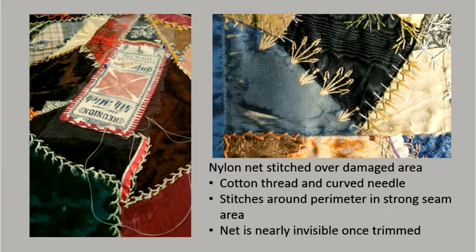On the left, you can see a net overlay in process, complete with the curved surgical needle you use to sew the fabric in place. On the right is a finished net patch where the edges have already been trimmed. Note that the net is almost invisible and so does not distract or drastically alter the look of the piece, allowing the original fabric to be both visible and secure. It is important to stitch through strong areas adjacent to the damaged fabric whenever attempting this type of repair.